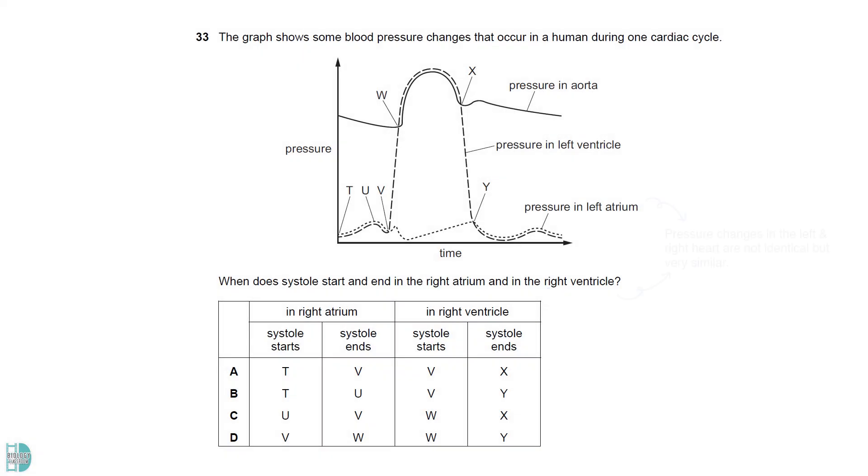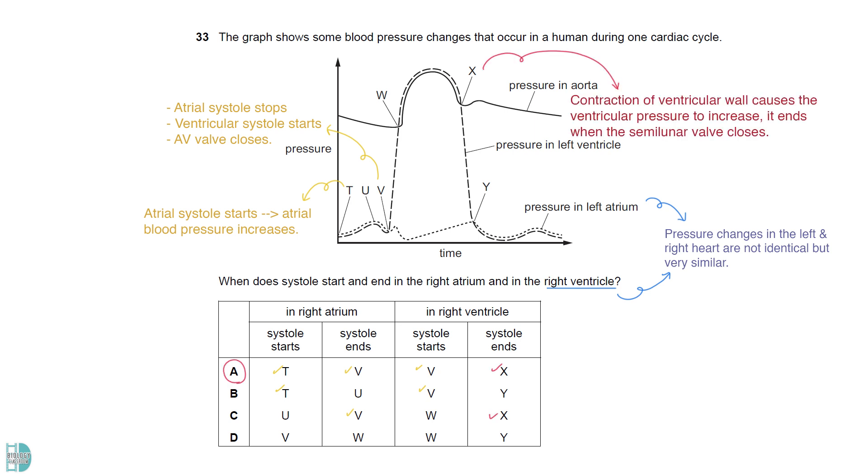Even though the graph shows pressure changes in the left side of the heart, similar changes should be observed in the right heart. Atrial systole starts at T and causes an increase in the atrial pressure. It stops at V when ventricular systole starts and the AV valve closes. The contraction of the ventricular wall causes the ventricular pressure to increase, and this process ends when the semilunar valve closes.